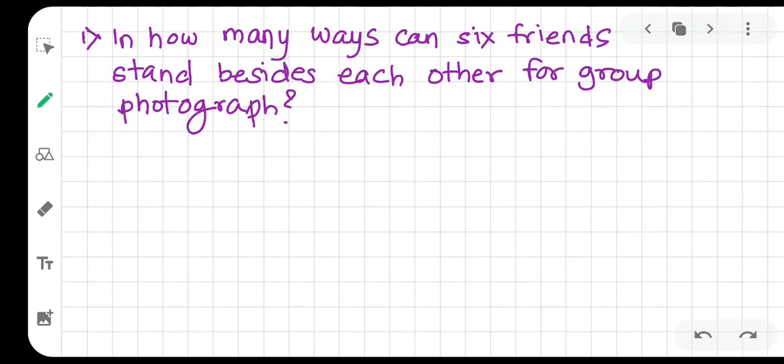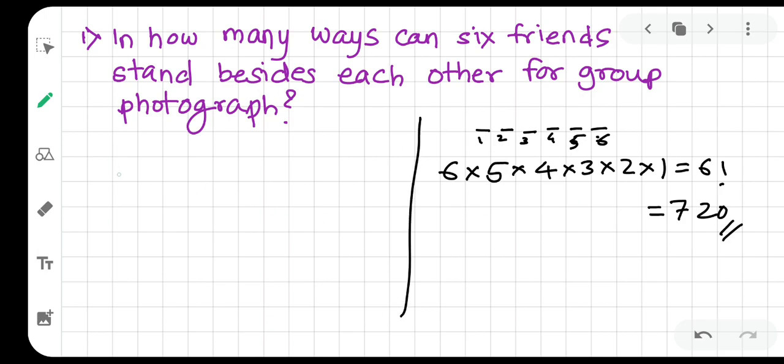Now let's solve the problem: in how many ways can six friends stand beside each other for a group photograph? There are 6 friends and they want to stand next to each other for a photograph. Suppose these are 6 places where 6 friends want to stand. The first place can be filled in 6 ways, second in 5 ways, third in 4, fourth in 3, fifth in 2, and sixth in 1. That is 6 factorial, which equals 720.